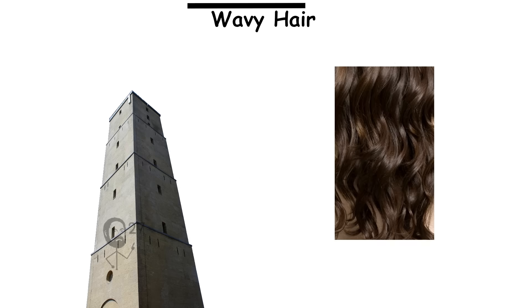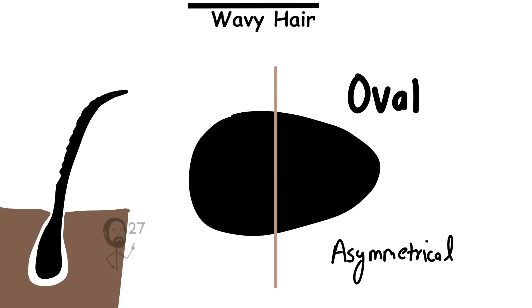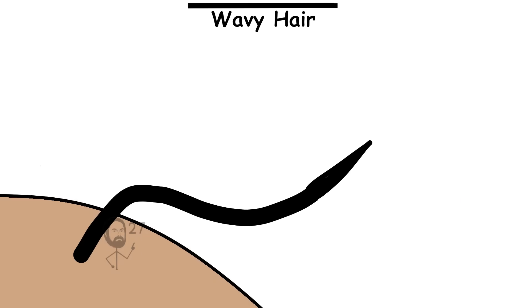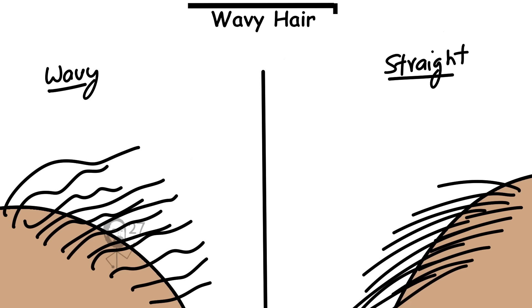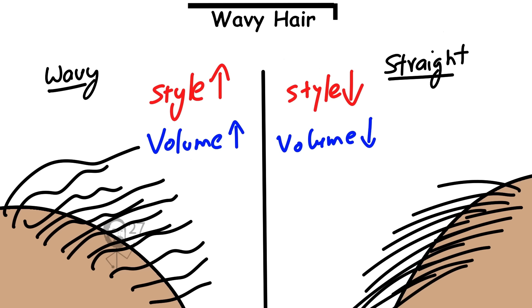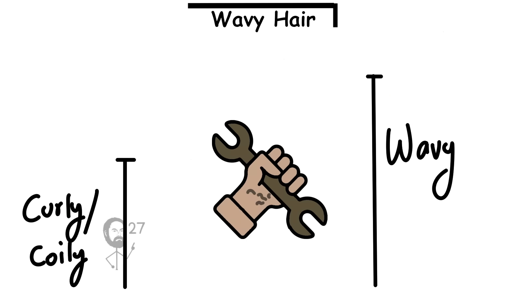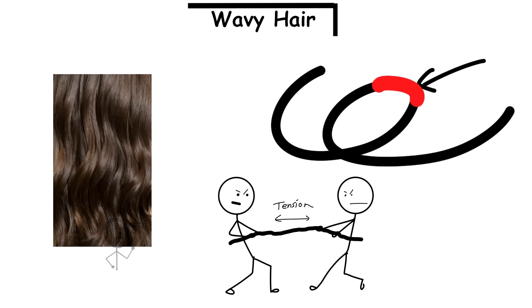Structurally, wavy hair arises from an asymmetrical hair follicle that produces strands with a slightly oval cross-section. This geometry gives the hair a natural undulation as it grows, creating bends that catch more light and surface friction than straight hair. As a result, wavy hair holds styles and volume more easily than straight strands, but without the dense entanglement or oil trapping of tighter curls. It's also mechanically less fragile than curly or coily hair, since the waves distribute tension more evenly along the strand instead of concentrating it at sharp turns.